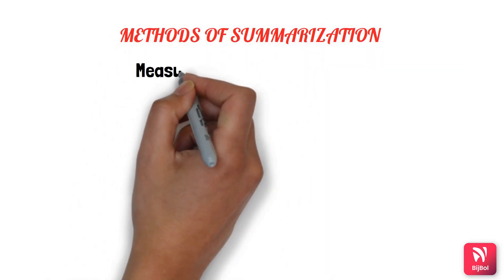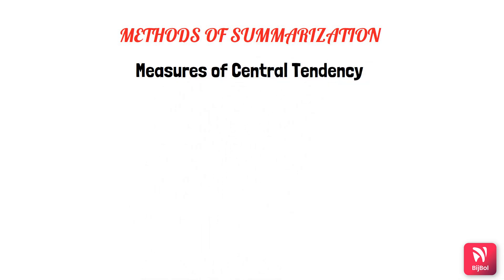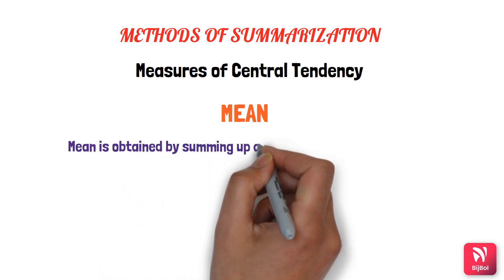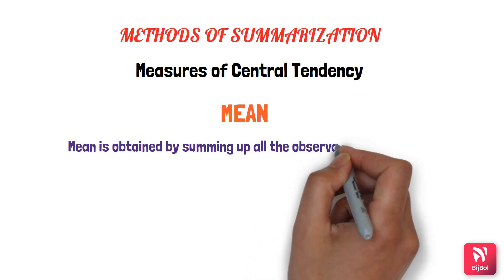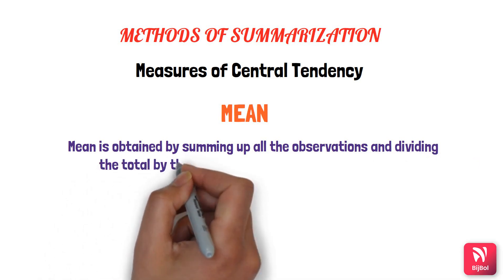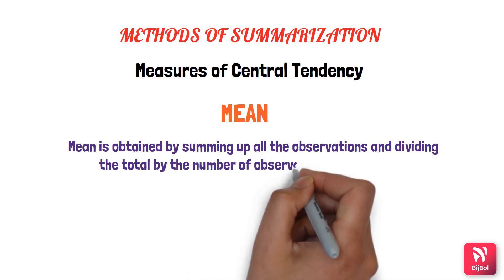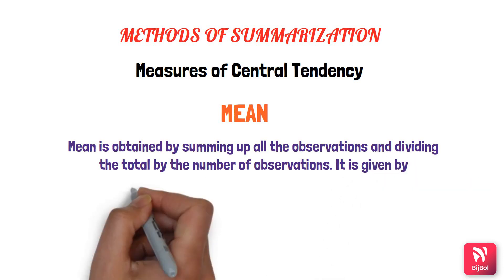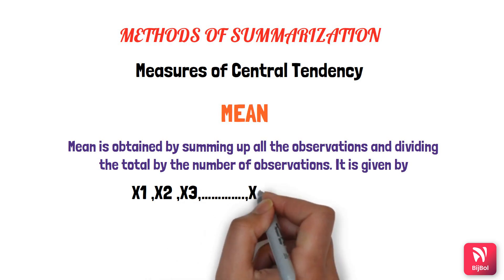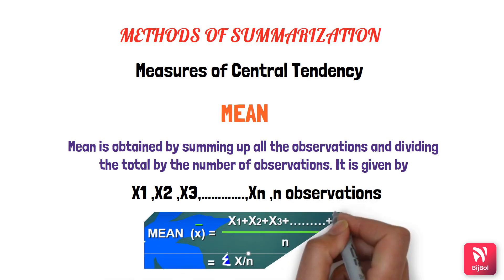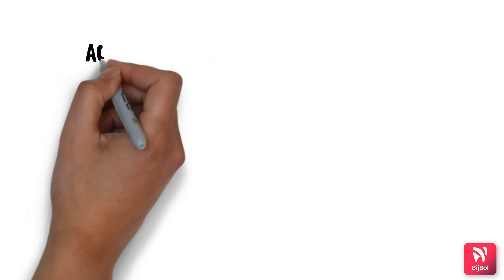Now let us see the methods of summarization. The measures of central tendency include mean, median, and mode. The mean is obtained by summing up all the observations and dividing the total by the number of observations — it is the average of all observations made. If there are observations x1, x2, x3 up to n, the mean is the sum of all observations divided by the total number of observations.